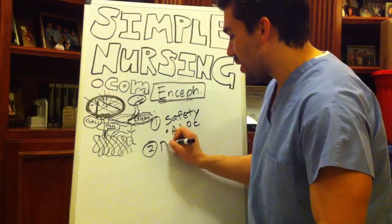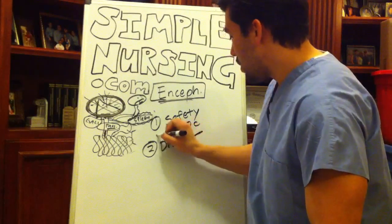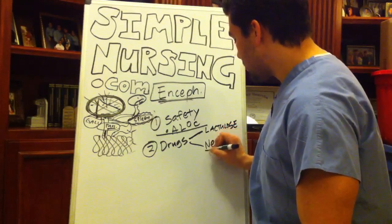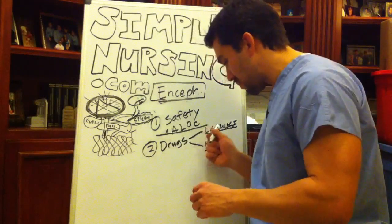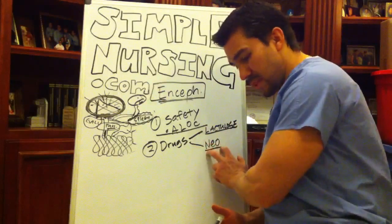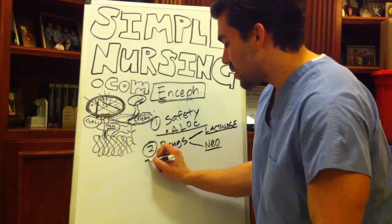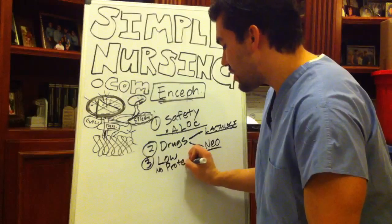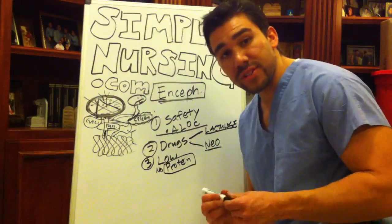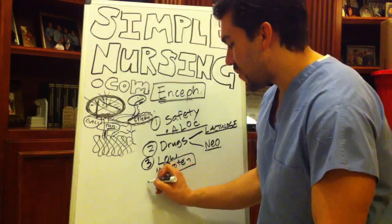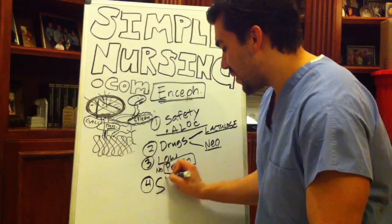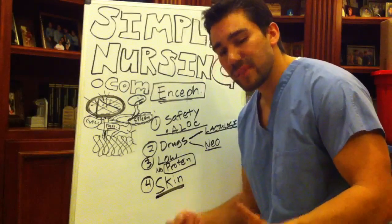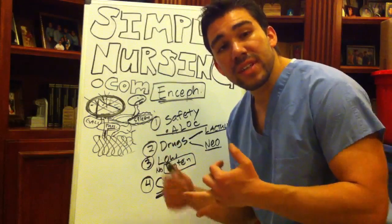We're going to give our lactulose and our neomycin — excreting the ammonia and stopping the breakdown of protein. We're also going to promote our low-to-no-protein diet, which really depends on the severity and what the doctor orders or the severity of the ammonia. And our fourth nursing consideration is skin integrity. Think about what the liver produces: albumin, bile, and coagulation factors.